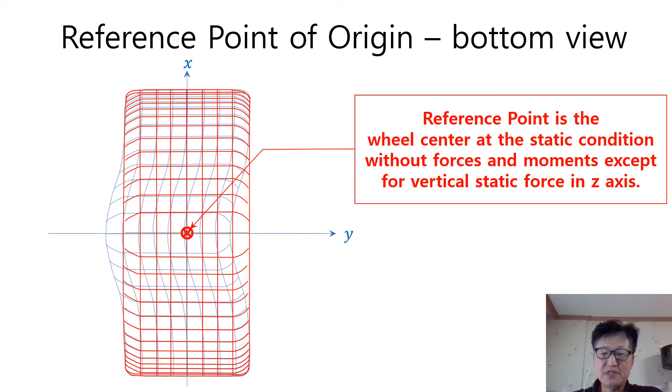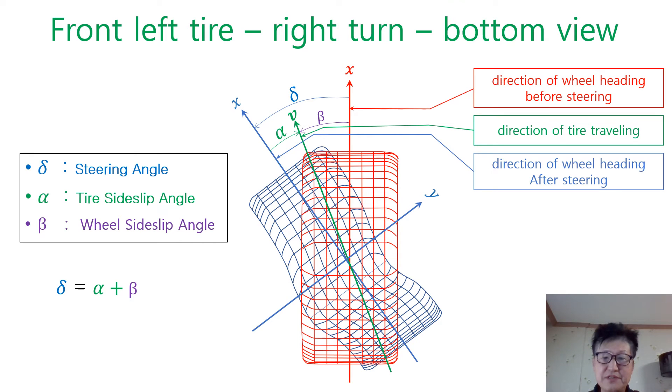The reference point is the wheel center at the static condition without the forces and the moments except for a vertical static force in Z direction. This is the bottom view of the front left tire in the right turn. The red X axis stands for direction of wheel heading before steering.